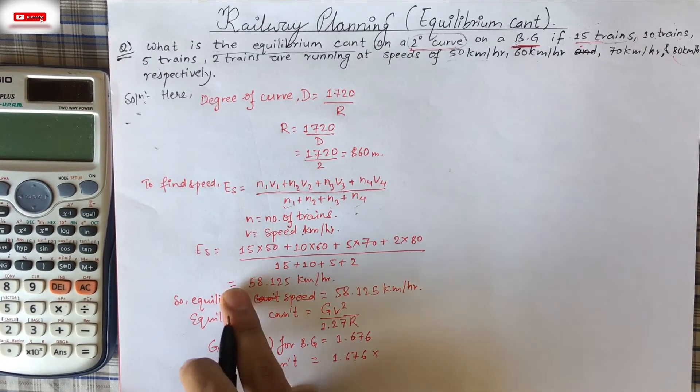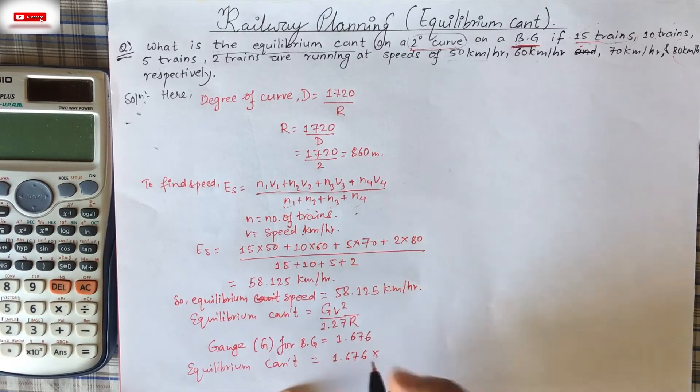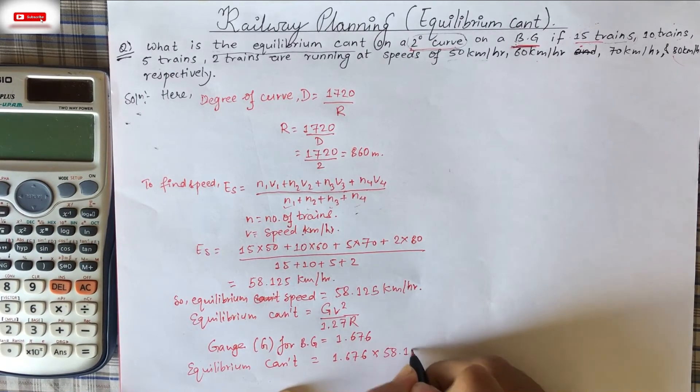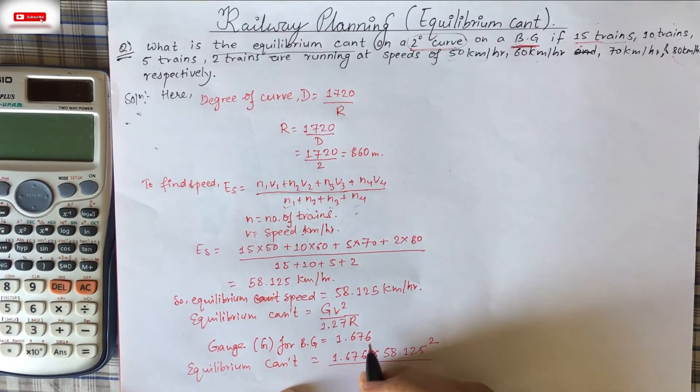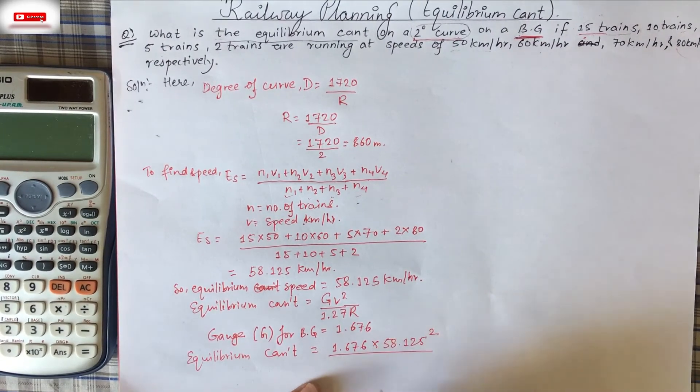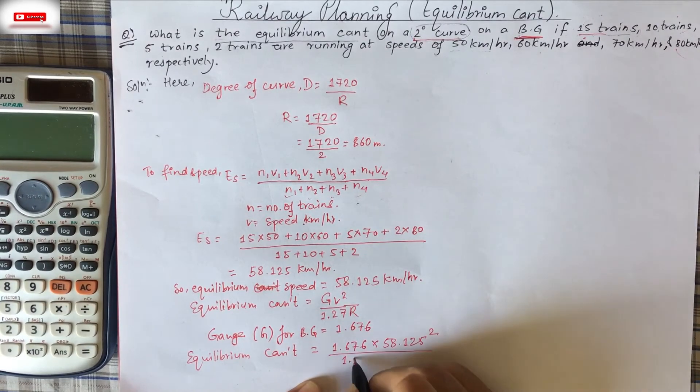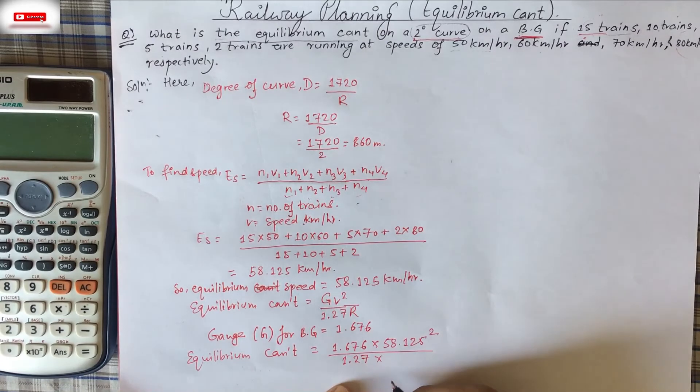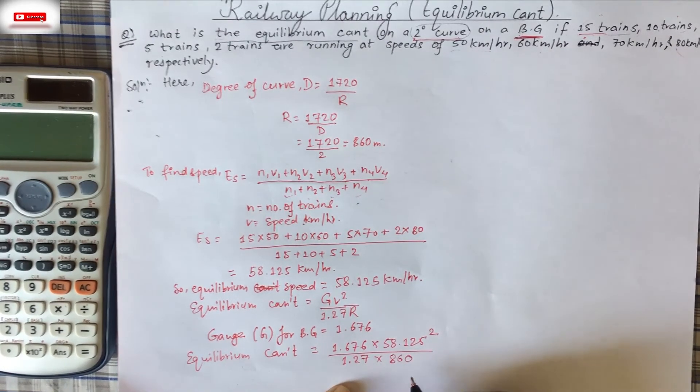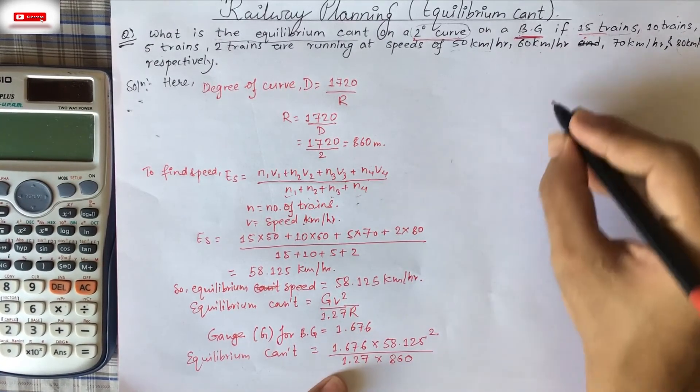So that equilibrium cant is equal to, now we have to substitute the value G. G is 1.676 into, here we have found just now, that is 58.125. Equilibrium speed is the V. So we can write 58.125 square. And 1.27 into R is this one. Here we have found, 860.